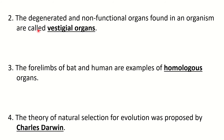Second question — the degenerated and non-functional organs found in an organism are called vestigial organs. Third question — the forelimbs of bat and human are examples of homologous organs.